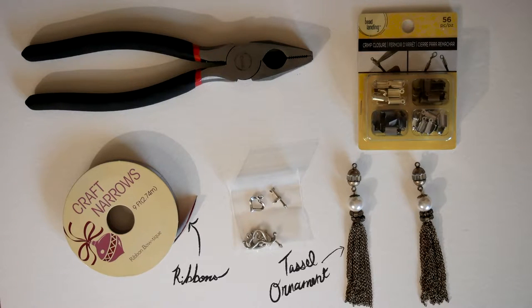Alright, so let's just get started. Things you need: ribbons, tassel ornaments, clasp, crimp closures, and pliers.